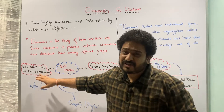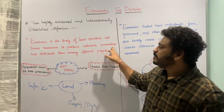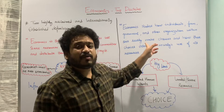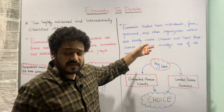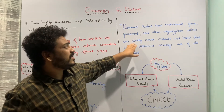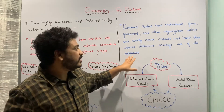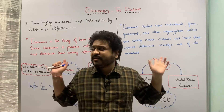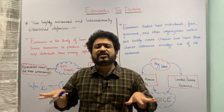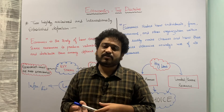So the key underlying ideas in both definitions involve scarcity. The first focuses on how societies use scarce resources to produce valuable commodities and distribute them among people. The second looks at how individuals, households, firms, governments, and other organizations make choices, and how those choices determine society's use of resources. In the next class we will look at the working definition of economics. Please stay tuned, thank you.